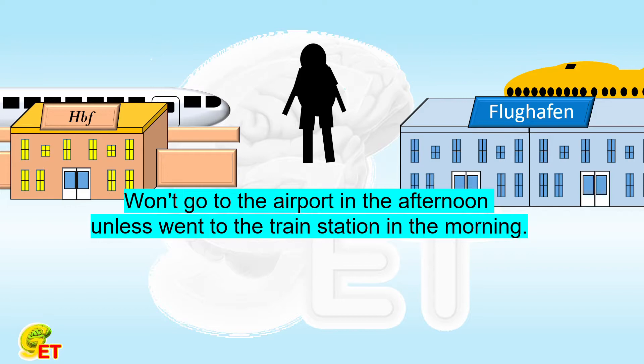Did he also go to the train station in the afternoon? Yes, for five times. What about the morning? He went to the train station in total for six times in the morning. How many times has he been to the airport? Seven times in total.